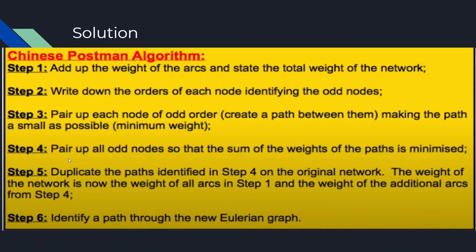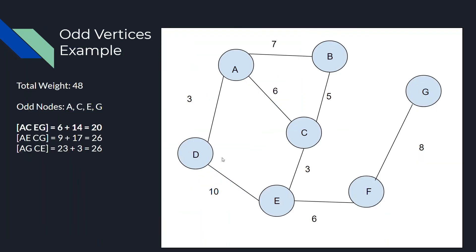So, let's go to step four. Pair up all the odd nodes so the sum of the weights of the paths is minimized. So, in order to do that, we can compare every single combination of pairs of paths together. So, for example, we can go through all the different paths for A. So, A has to connect to C, has to connect to E, and has to connect to G. So, we have AC and the remaining two, EG. So, we have 6 plus 14. As I said before, that's 20. Let's do the same thing for AE.